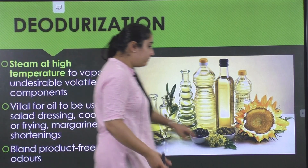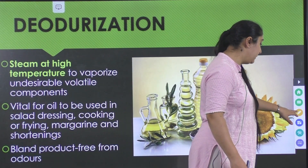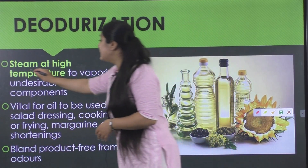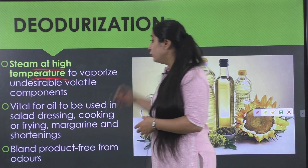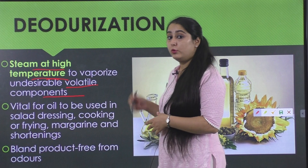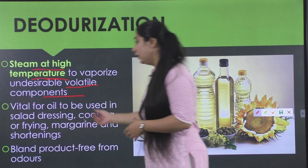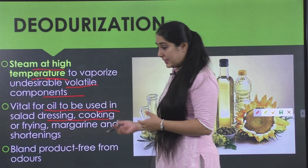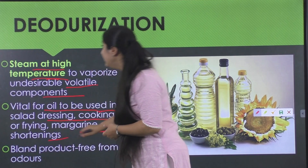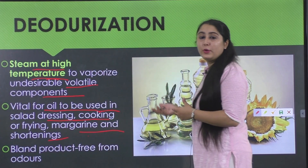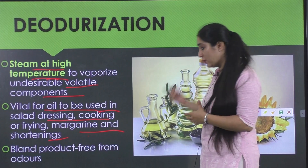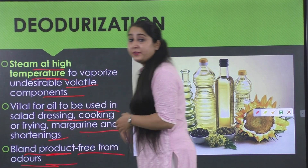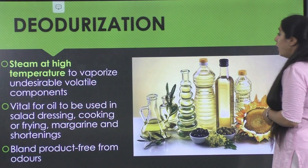Deodorization removes small aldehydes, ketones, and other compounds that might give an off odor. Steam at high temperature is used to vaporize these undesirable volatile compounds. This step is especially essential for oils intended for use as salad dressing, cooking, frying, or in margarine and shortening. The final product is a bland oil, free from any undesirable or different odor.